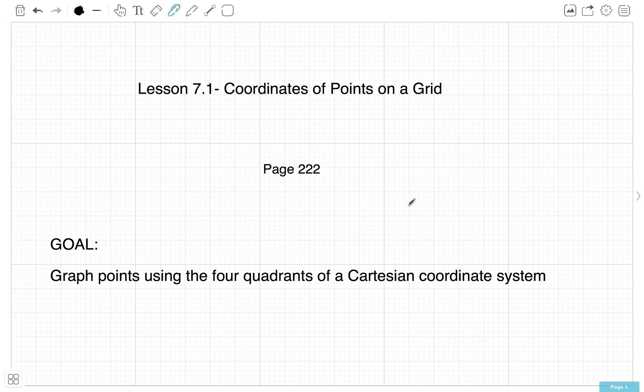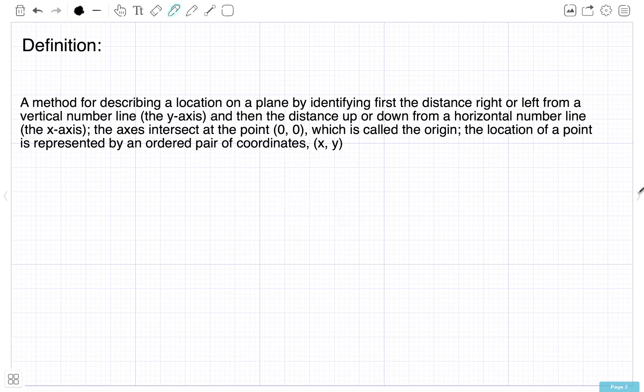First thing we need to know is what are the four quadrants of a Cartesian coordinate system? According to the textbook, the Cartesian coordinate system is a method for describing a location on a plane by identifying first the distance right or left from a vertical number line, the y-axis, and then the distance up or down from a horizontal number line, the x-axis. The axes intersect at point (0, 0) which is called the origin. The location of a point is represented by an ordered pair of coordinates.